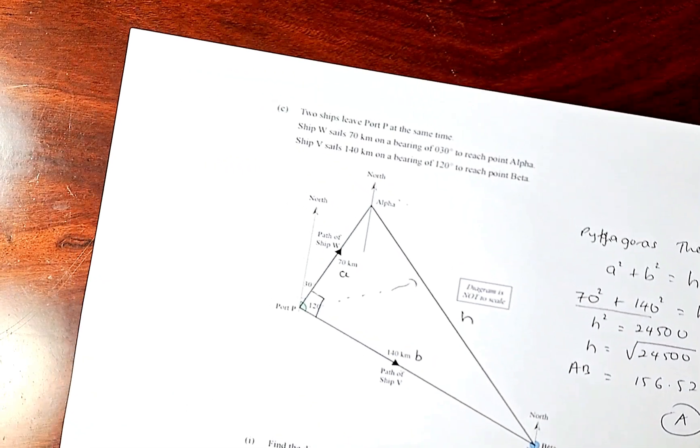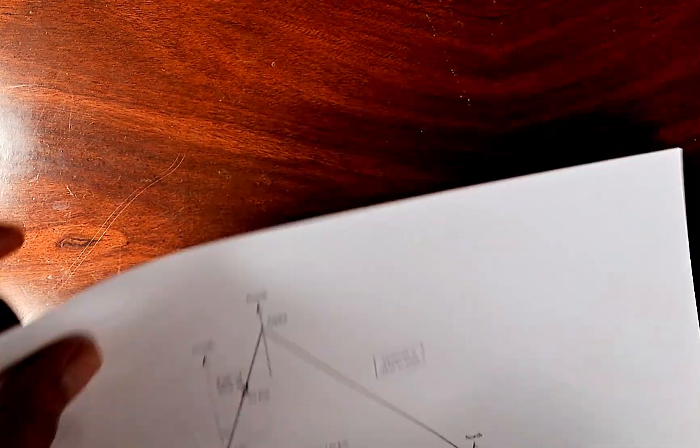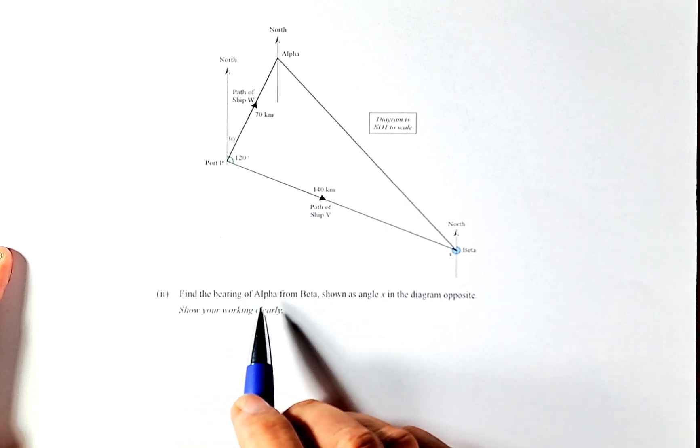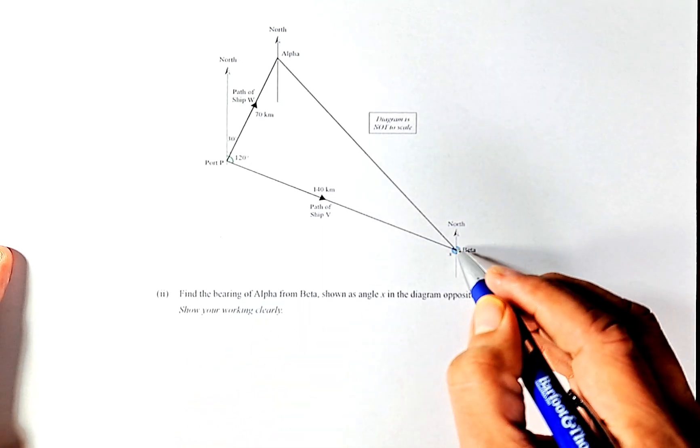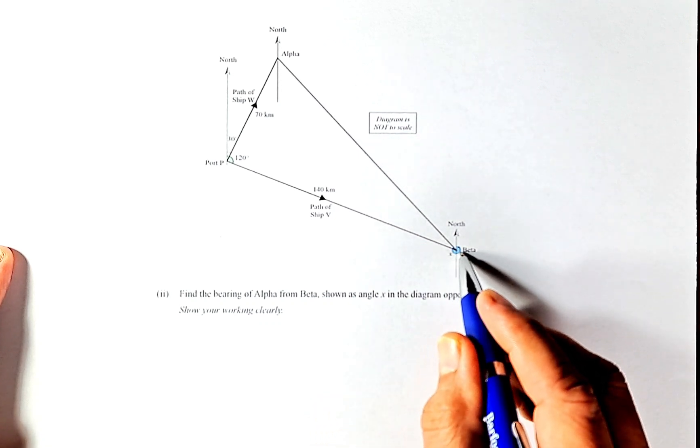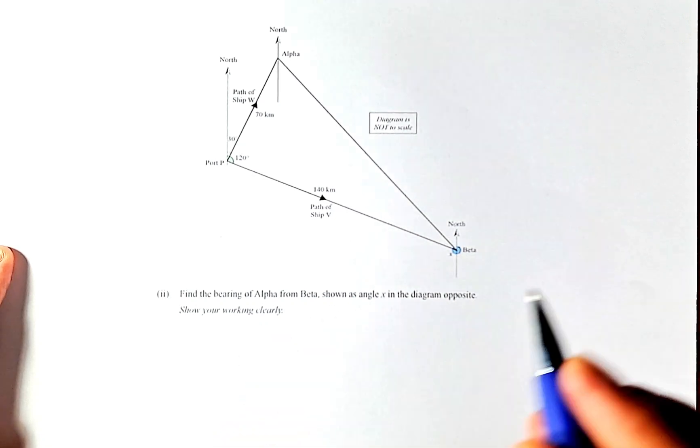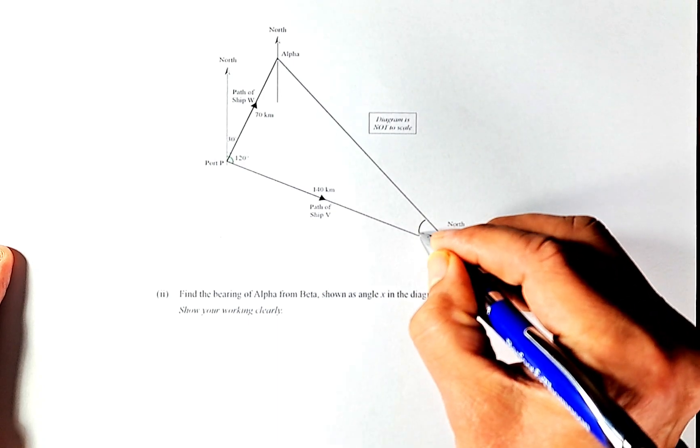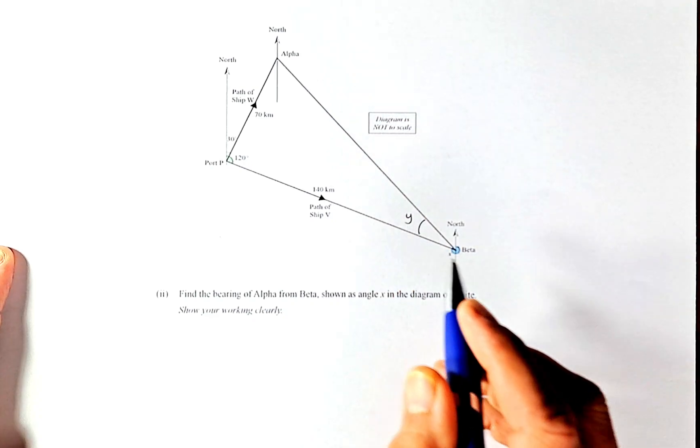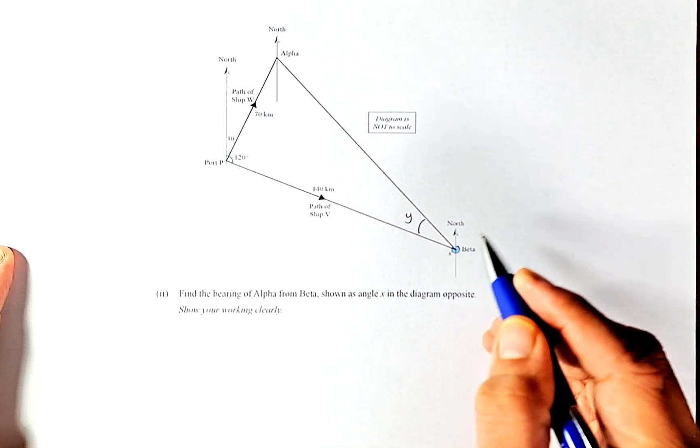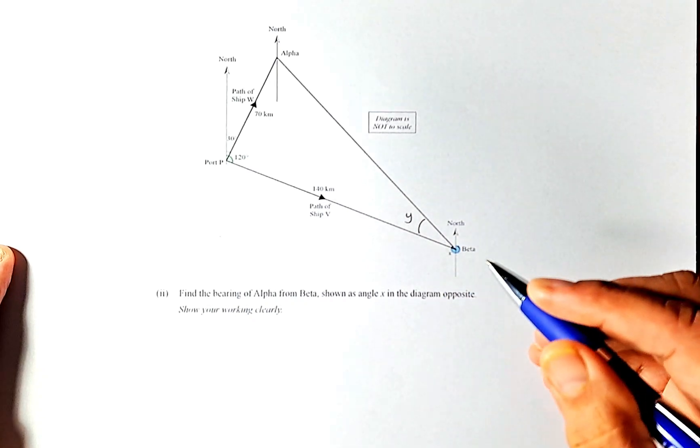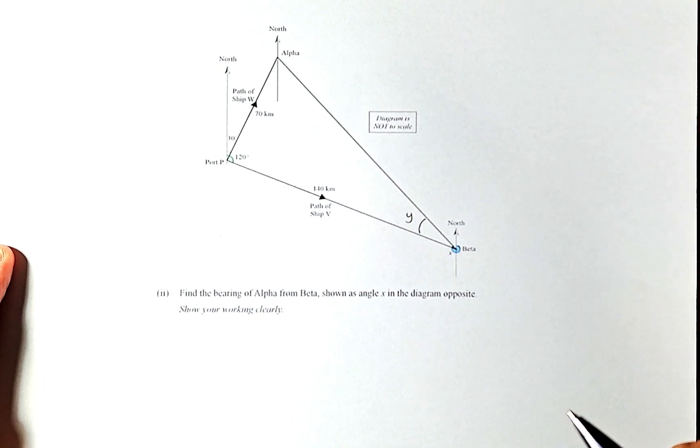We shall do the second part of question 1c and this time it's a merit question. Same question: find the bearing of alpha from beta. So from beta we need to find the bearing shown as angle x. We need first to find this angle we label as angle y, because we need that angle to calculate the bearing.